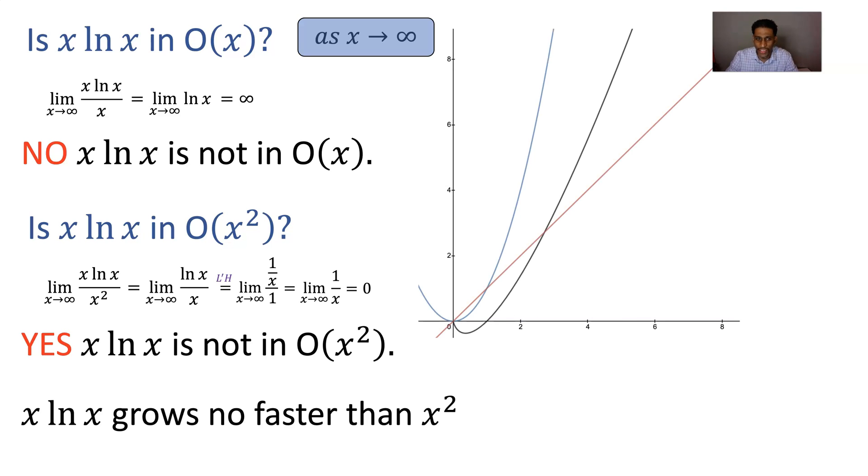Let's see the visual. In blue we have x squared. In black we have x log x. And in red we have x. We're not considering x equals zero, we're considering as x goes to infinity. And so yeah, that answers that question. We are in big O of x squared.